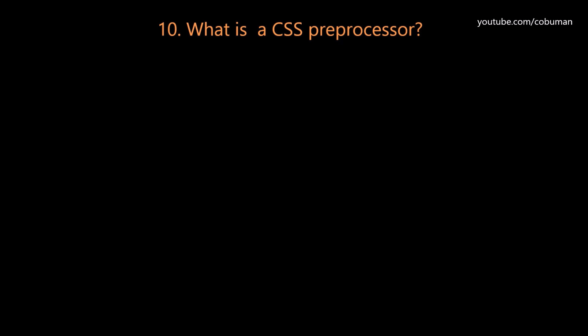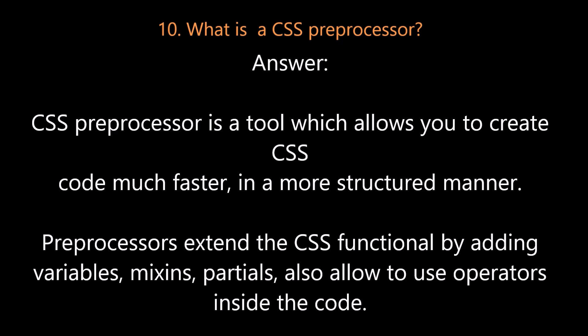Question number ten: What is a CSS preprocessor? A CSS preprocessor is a tool which allows you to create CSS code much faster in a more structured manner. Pre-processors extend CSS functionality by adding variables, mixins, and partials, and also allow the use of operations inside the code.